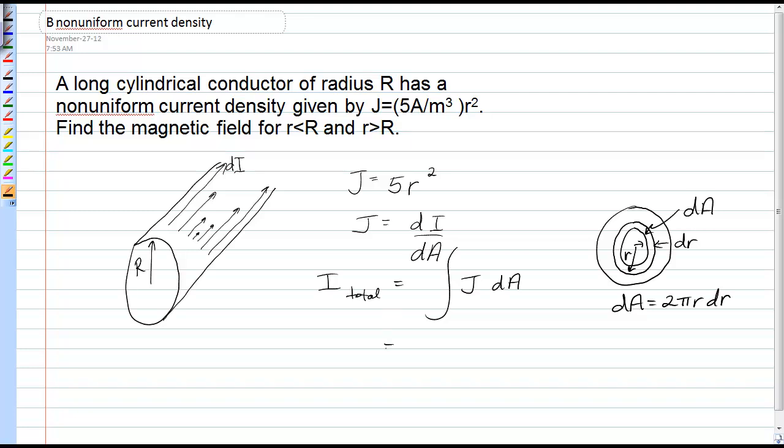So the integral that I need to do to get the total current would be from 0 to R of j times 2πr dr.